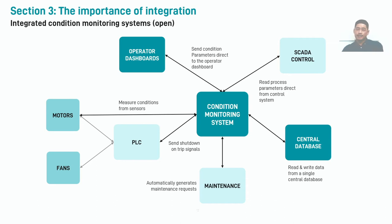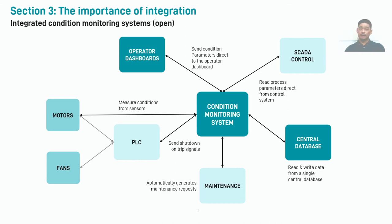Another key feature and a growing trend we've noted across the industry is the concept of an API, or Application Programming Interface, and more specifically an open API that allows and encourages integration and interfacing with other systems. An API can be used by in-house IT or engineering departments to directly interrogate third-party programs and devices to extract condition information directly, and can often be a more efficient method of extracting data, alarms, and other parameters.